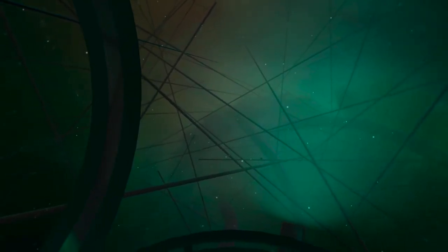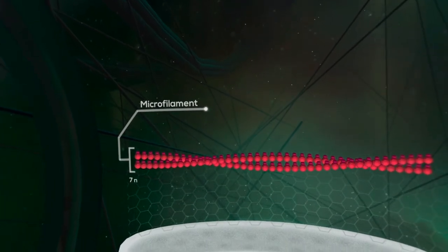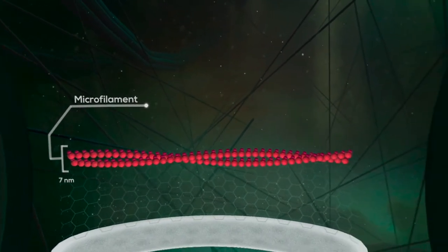The cytoskeleton is made up of a network of adjustable strands that gives the cell its structure. There are three different strands that make up the cytoskeleton. Microfilaments are the thinnest strand, measuring only 7 nanometers in diameter.